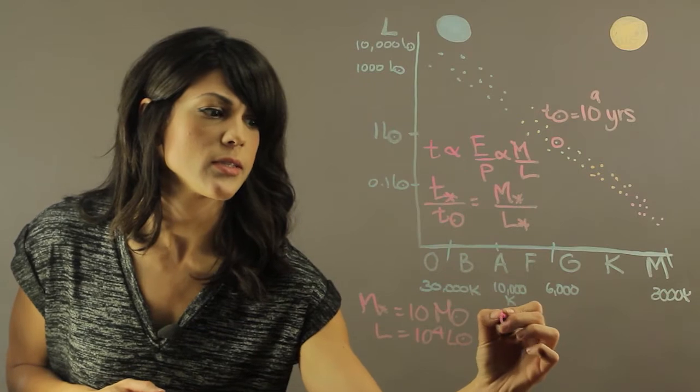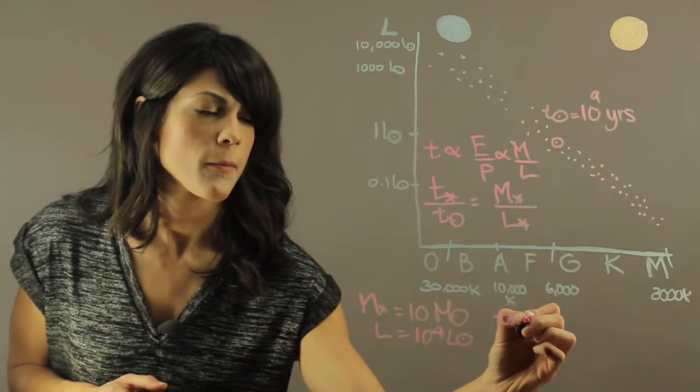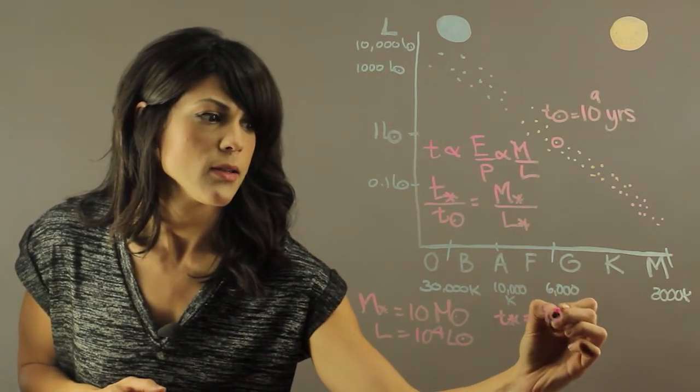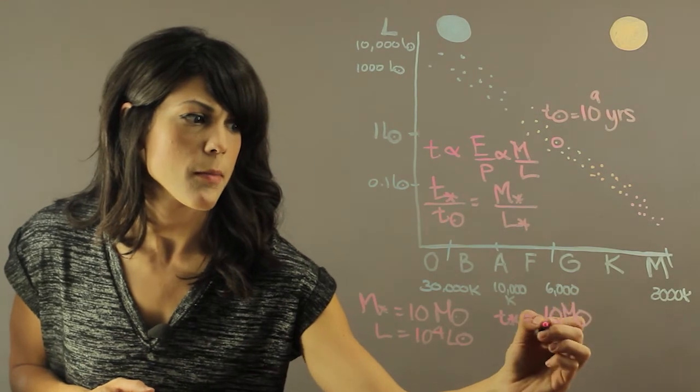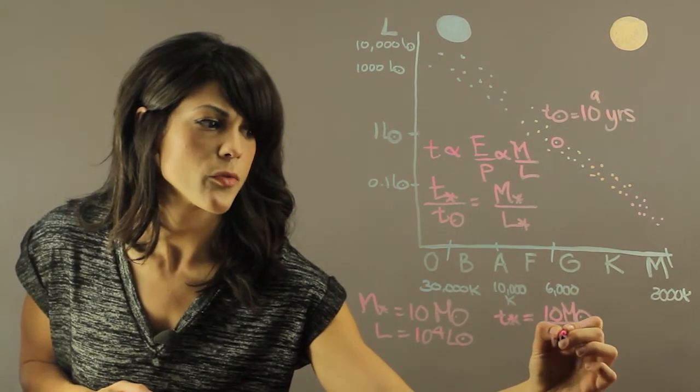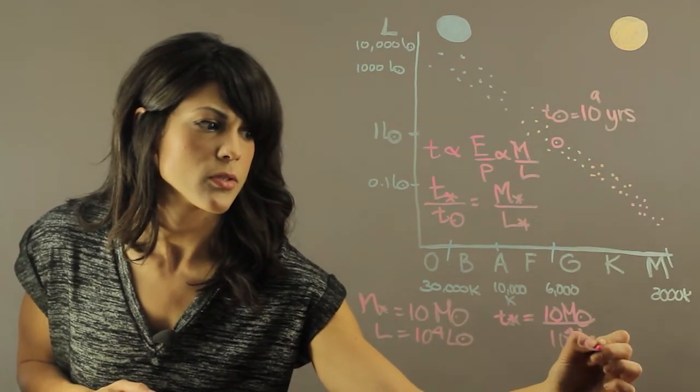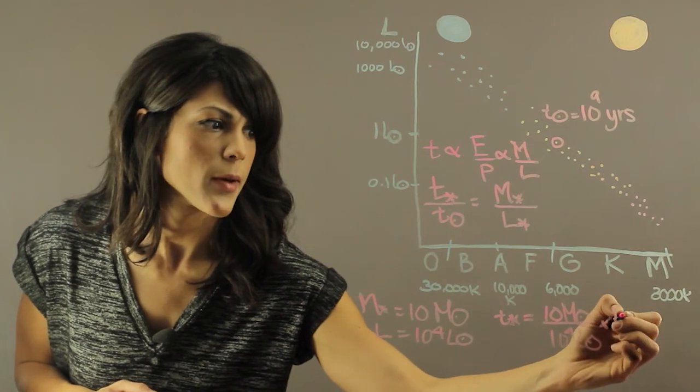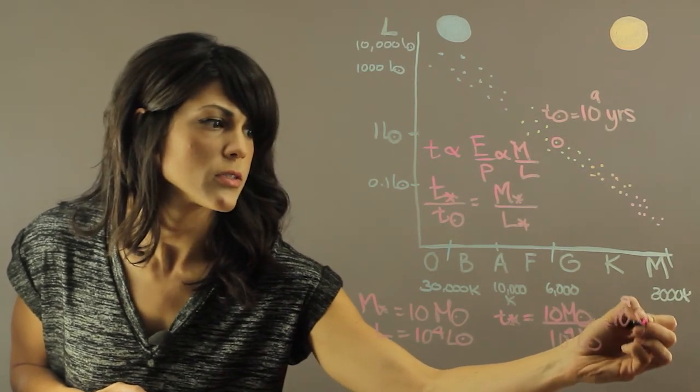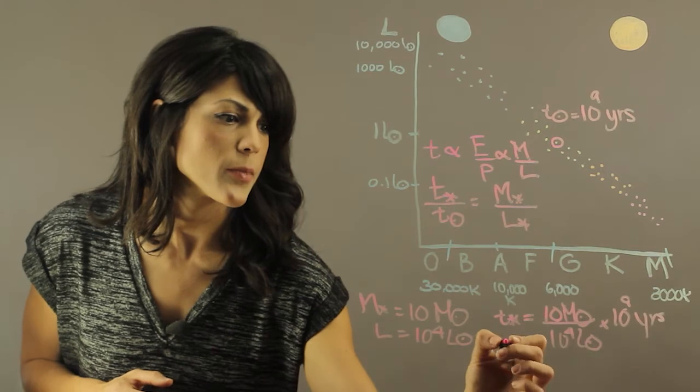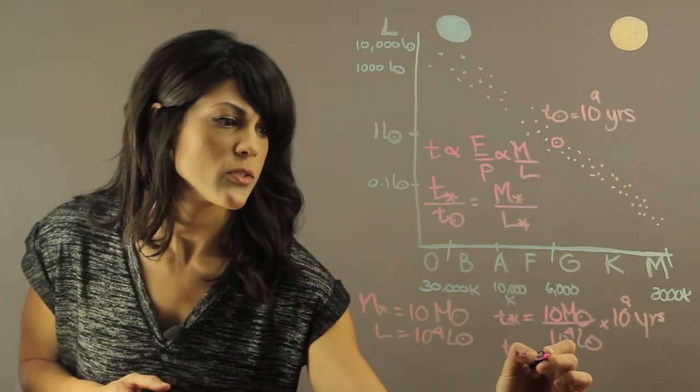If you plug in your T star, and then you plug in 10 M divided by 10 to the fourth luminosity of the star, and then multiply by 10 to the 9 years, you actually end up that this star is going to live 10 to the sixth years.